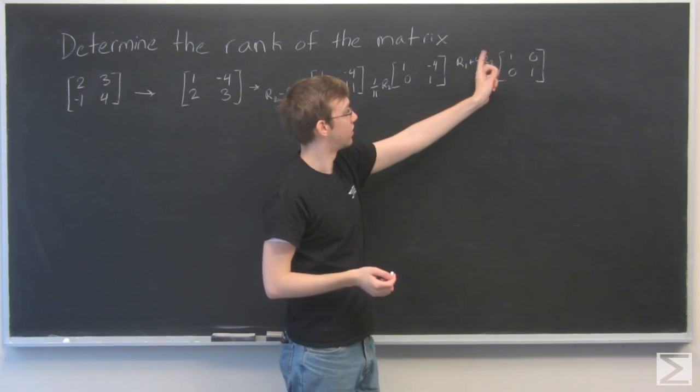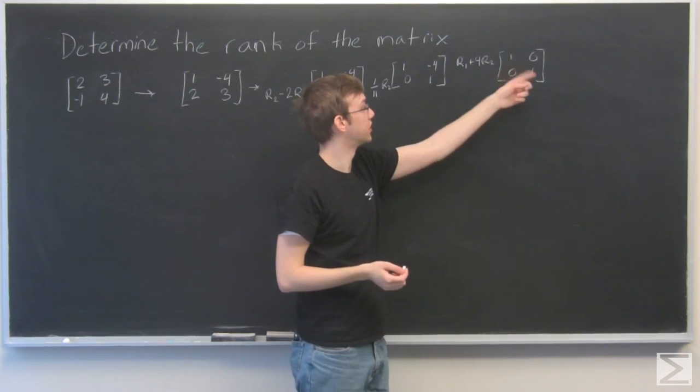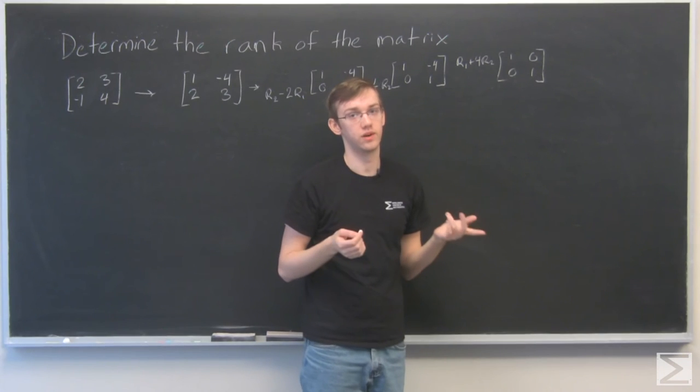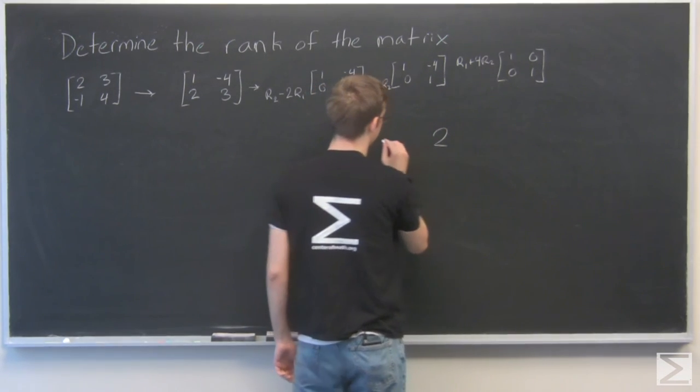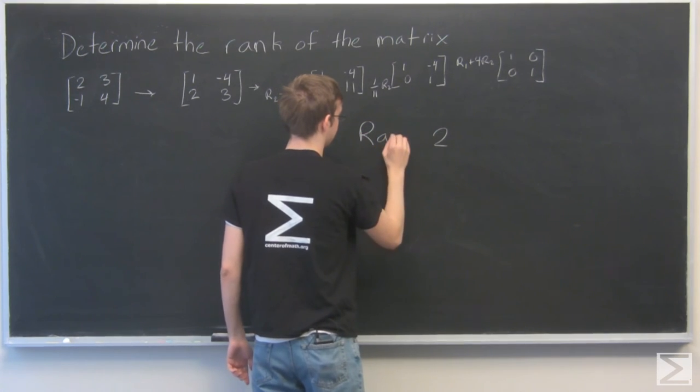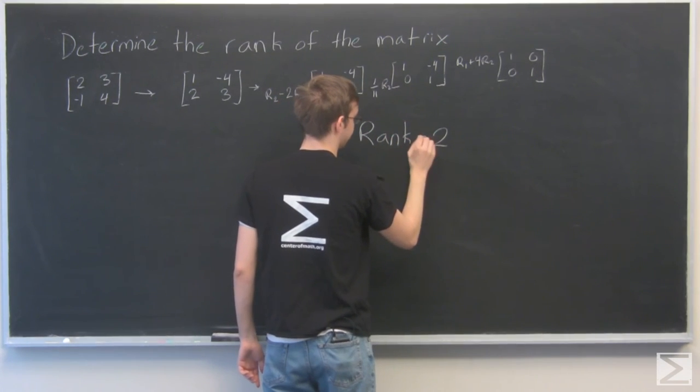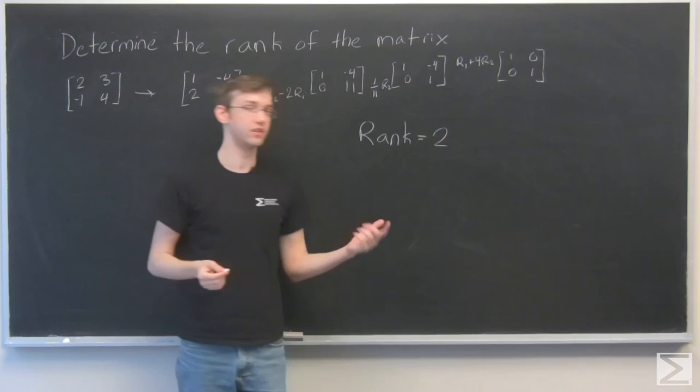As we can see, there are two non-zero rows because both rows have 1s in it. Therefore, the rank is 2. Rank equal to 2.